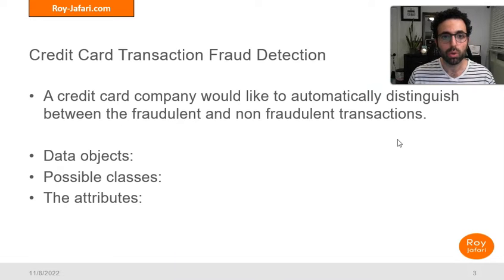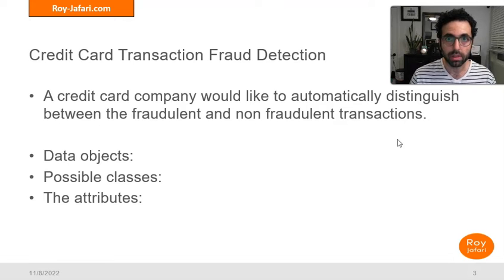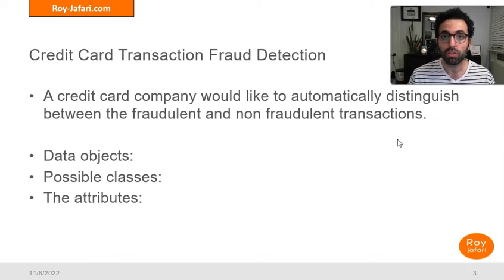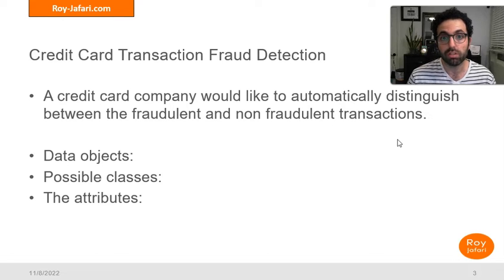In this video we are going to use this case study: credit card transaction fraud detection. This is perhaps something we all have experienced — we go to buy something with our credit card and we either get approved or get declined. Behind the scenes, a classifier uses data about us and other transactions to decide whether the transaction is fraudulent — whether this is not our credit card and we are purchasing illegally — or whether it is a legitimate transaction.